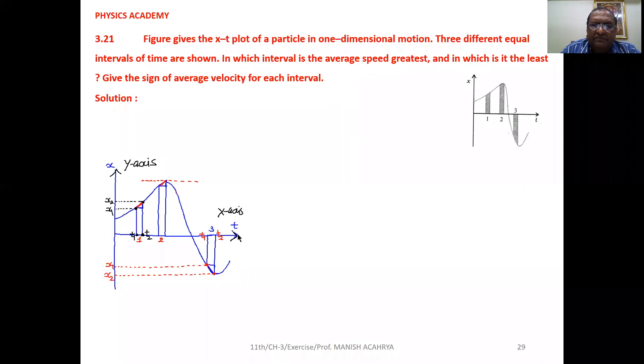Position time graph, and for the given time interval, if we find out the slope of that position time graph, then it will give you average speed.